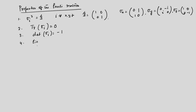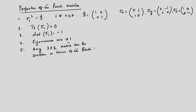Another important property: any 2×2 matrix with entries a, b, c, d can be written in terms of the Pauli matrices and σ_0, the identity matrix.